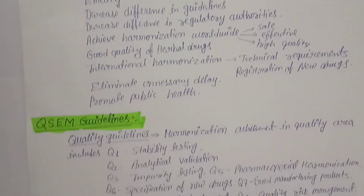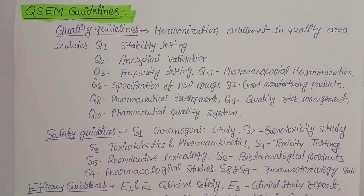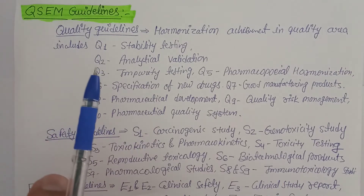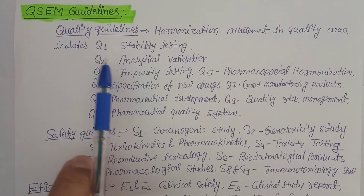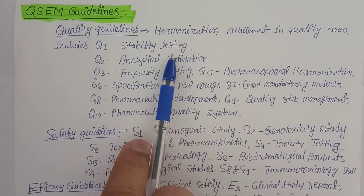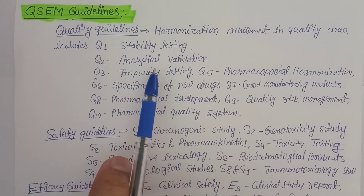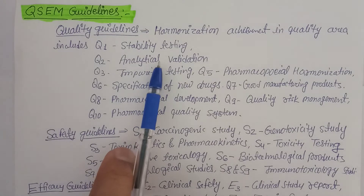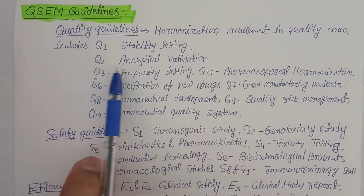ICH provides QSEM guidelines — Quality, Safety, Efficacy, and Miscellaneous. Quality guidelines ensure the quality of herbal drugs. Q1 covers stability testing: after formulation or manufacturing, whether the drug is stable, how long it remains stable, and checking physicochemical and biological properties — temperature, pH, and related parameters — at intervals such as six months, one year, and two years.